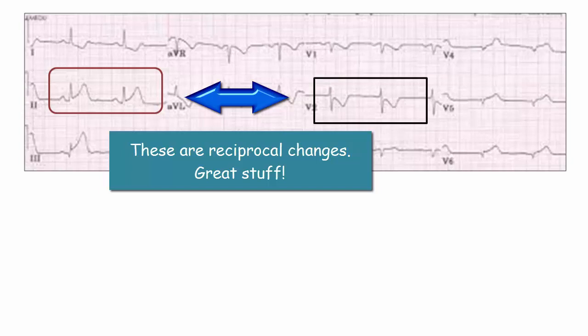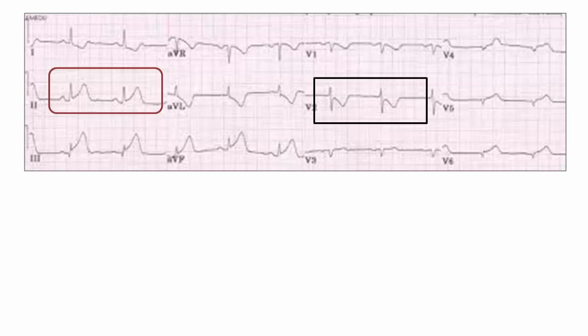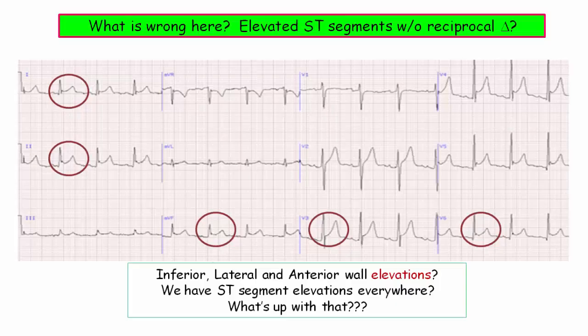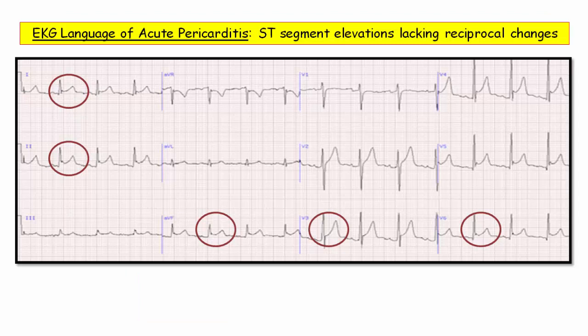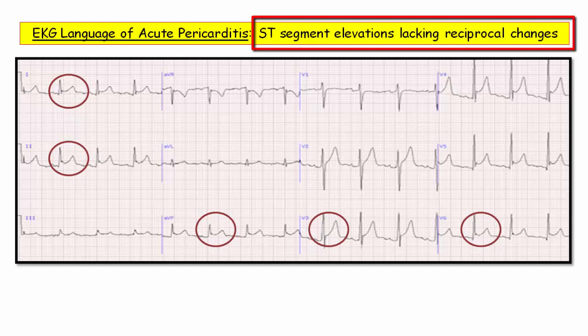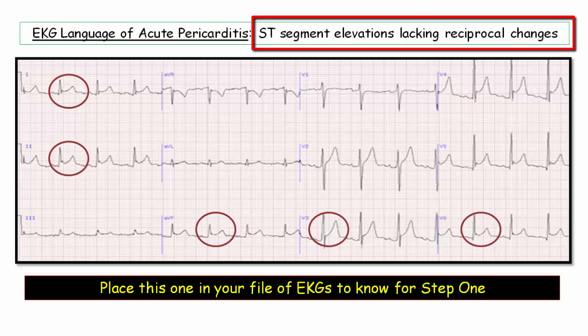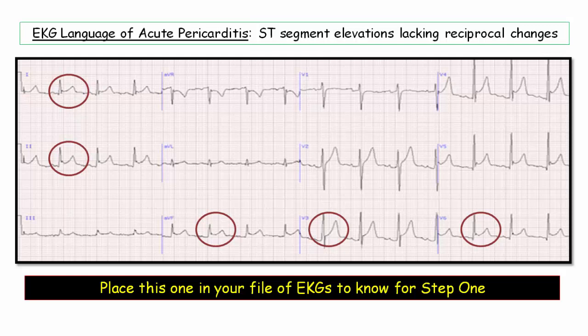So let's compare and contrast this with the expected EKG in a patient with acute pericarditis. What do we have? ST segments elevated all over the place — elevation in inferior, lateral, and anterior leads. Where are those reciprocal changes? They are nowhere to be seen. This is the electrocardiographic language of acute pericarditis for the USMLE Step 1 exam: diffuse ST segment elevations lacking reciprocal changes. So we can put this one in your files of EKGs to know for Step 1. There are other EKG changes, but nothing they would ever test you on.